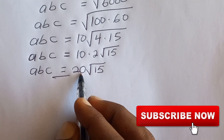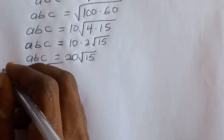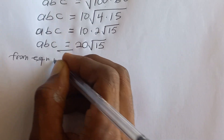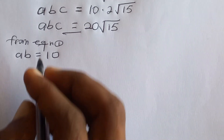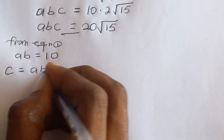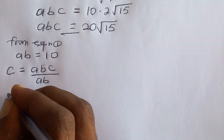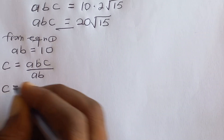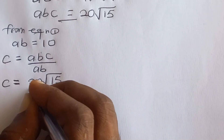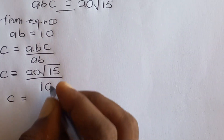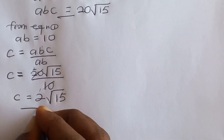Now we need to find the individual values. We want a plus b plus c. From equation 1 (ab = 10), we can find c: c equals abc divided by ab, which is 20√15 divided by 10, giving us c equals 2√15.